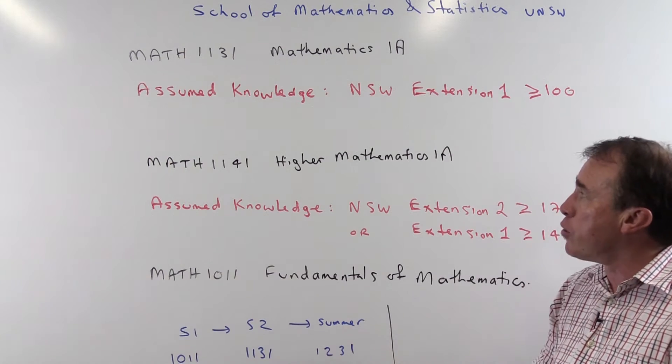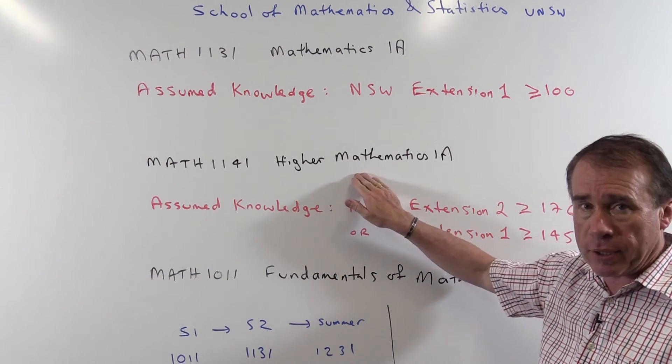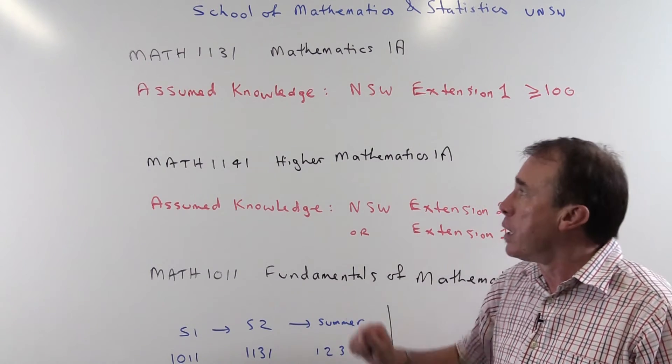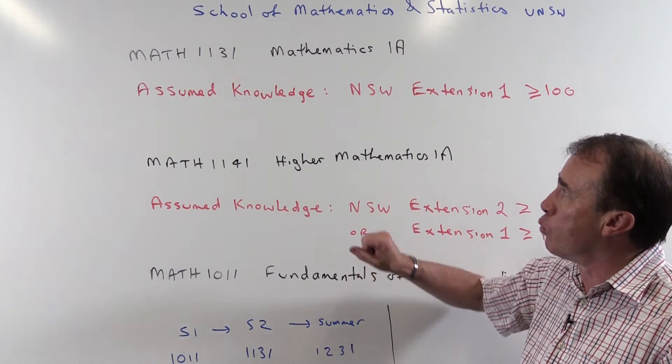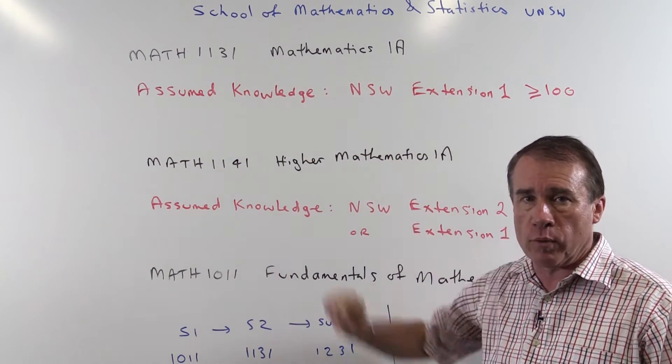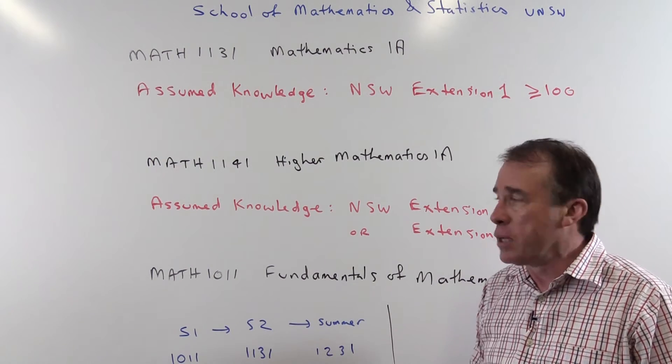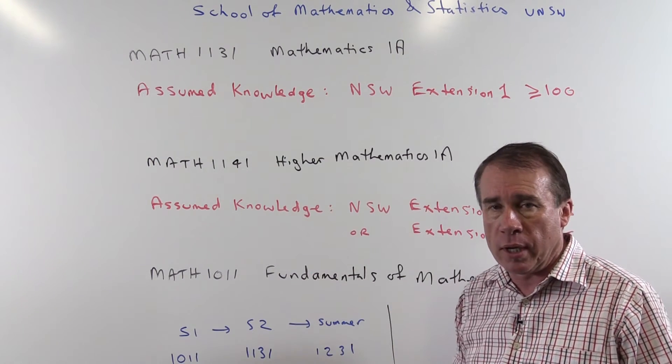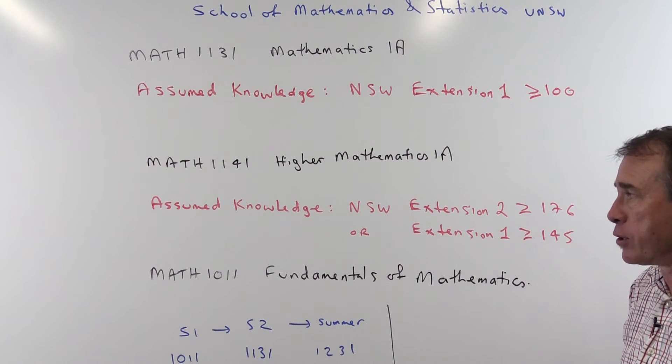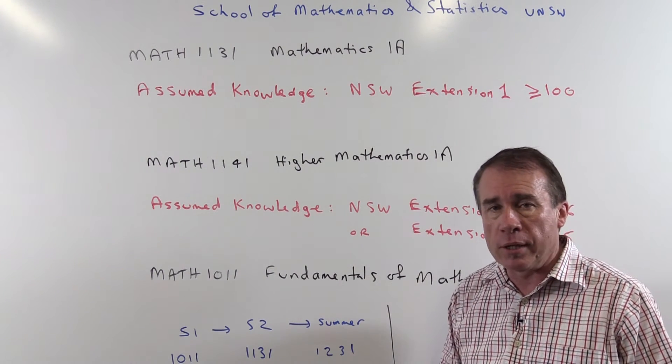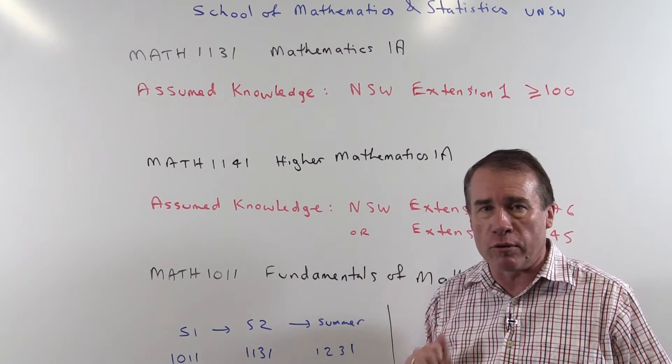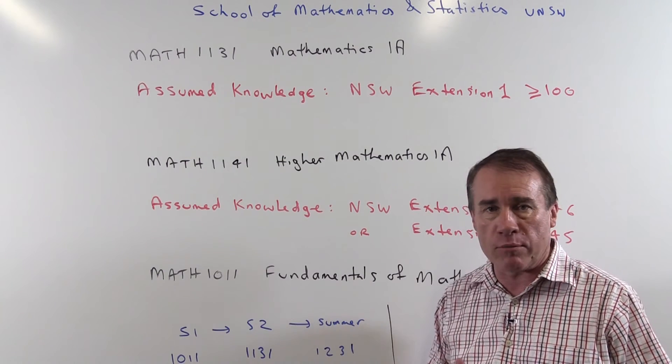Now please note that you don't need to do higher mathematics in order to satisfy the requirements of any of your programs. All of these programs will say either maths 1131 or maths 1141. So you should only be enrolling in the higher course if you've satisfied the requirements of the assumed knowledge and secondly if you're really interested in mathematics and you've done high levels of it at school and you're really very keen on the subject.